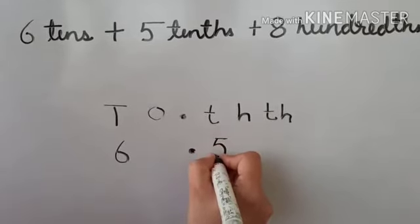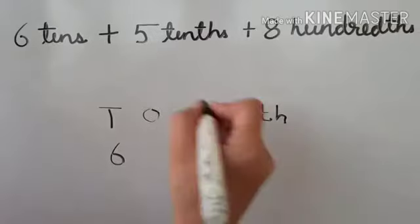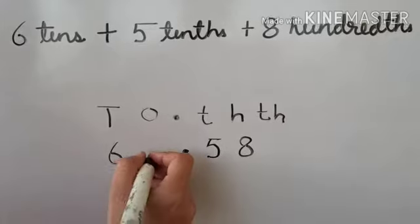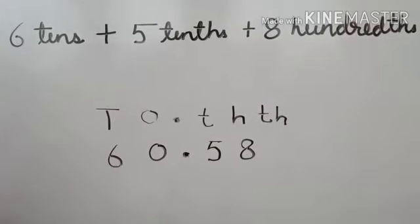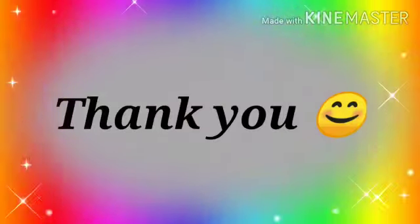And 8 at hundredths place. So leftover place is ones, we put 0 under the ones place. And the number is 60.58. Thank you children. Enjoy learning.